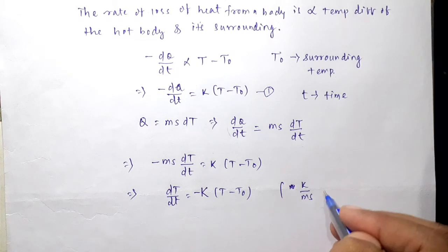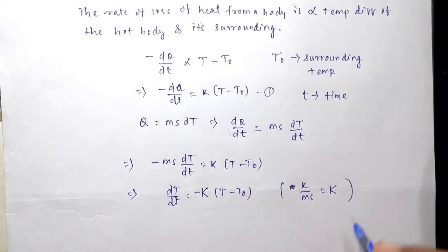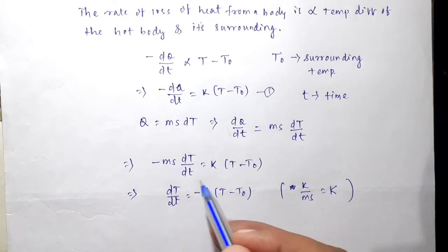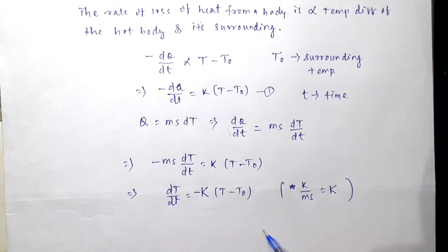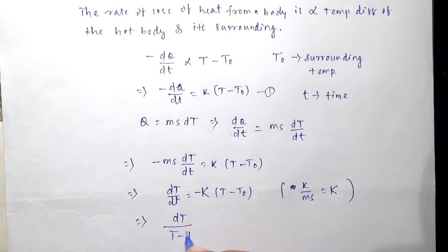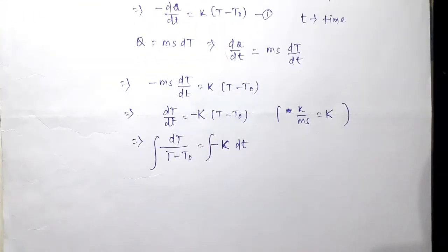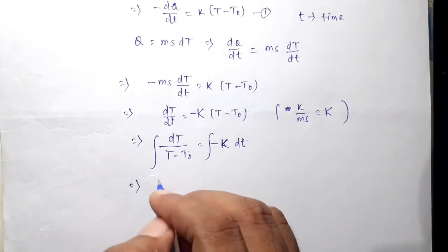Moving m·s and k to the right side, we get dT/dt equals minus k/ms times T minus T0. Now k/ms is a constant, so let's call it capital K. So dT/dt equals minus K times T minus T0. Now we'll integrate to find the value of T.